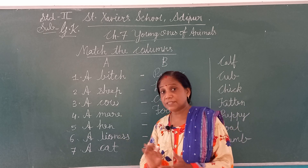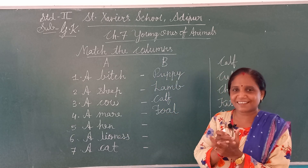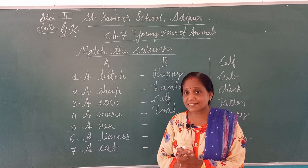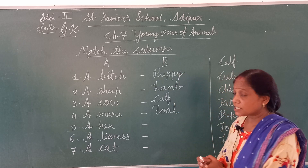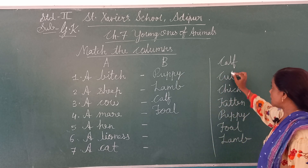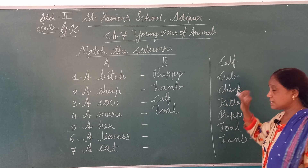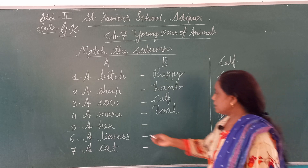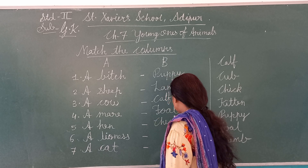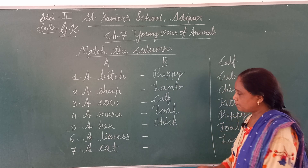अभी Hen के बच्चे को क्या बोलेंगे? छोटे-छोटे प्यारे-प्यारे chicks होते हैं ना? तो क्या बोलेंगे — Chick. It also starts with the letter C — C-H-I-C-K. तो a Hen के सामने हम लिखेंगे C-H-I-C-K. Chick, complete.